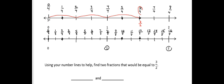And then you can see that both 6 fourths and 12 eighths are at that point. So 6 fourths and 12 eighths are equivalent to 3 halves.